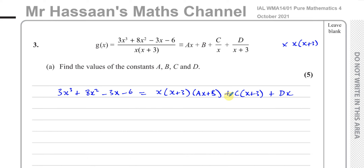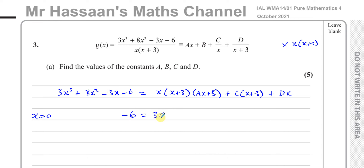Now we've got to find the values of A, B, C, and D. There are different methods: substitution or comparing coefficients, sometimes a variety of both. I'm going to substitute x equals zero first, because that gets rid of the d term and the whole bracket term. On the left side everything becomes zero except negative six, and on the right you're left with three c. So negative six equals three c, which gives c equals negative two.